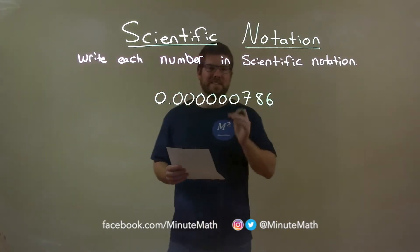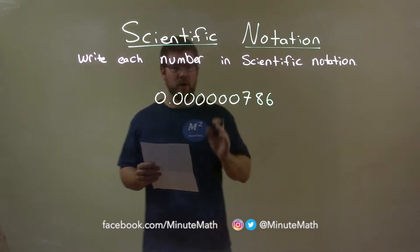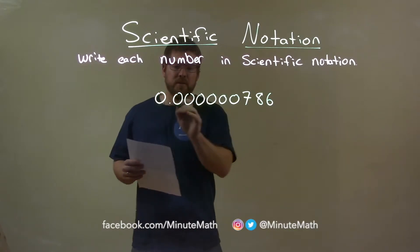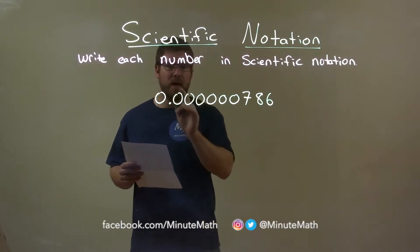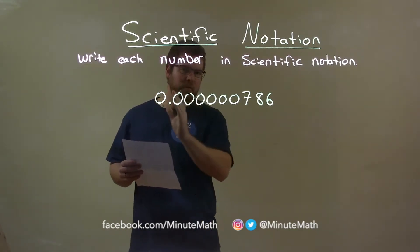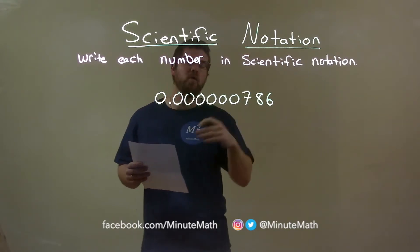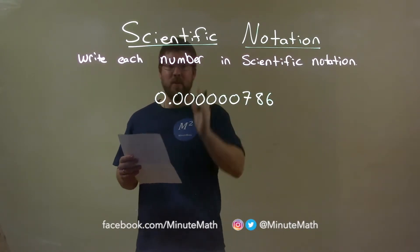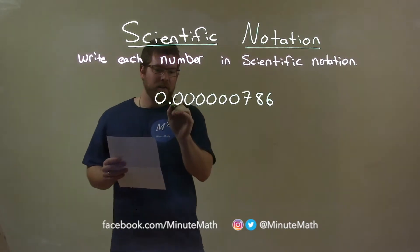So we want to write this in scientific notation. To get there, we start with this decimal place here, and we want to get to the first digit that when we bring the decimal place over, it will be in the ones place.